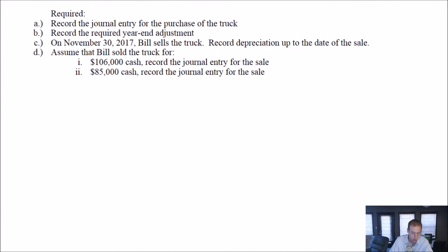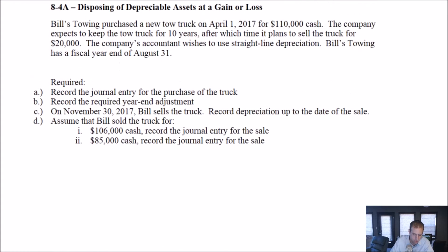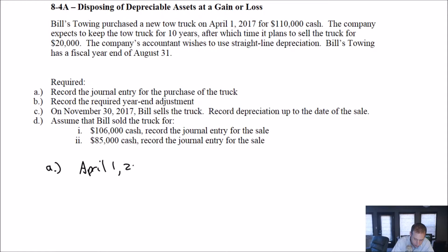So the first one, I guess I can leave it up here. April 1st, 2017. And this is our answer to part A. I've kind of scanned the question ahead here. April 1st, 2017, we bought a new tow truck for $110,000 cash. So debit, we'll just call it truck. I mean, we could say tow truck, but that's fine. Credit cash, $110,000. Okay, so there's journal entry A in the bag.